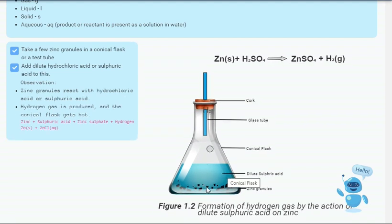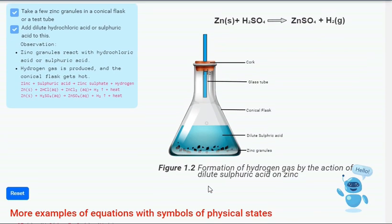Zinc plus diluted hydrochloric acid gives diluted zinc chloride plus hydrogen gas evaporated and heat produced. Zinc plus diluted sulphuric acid gives diluted zinc sulphate plus hydrogen gas evaporated and heat produced.